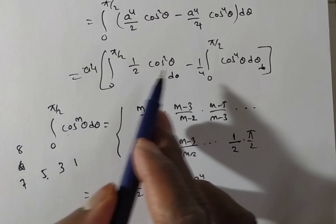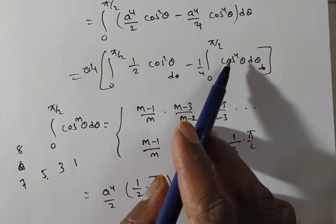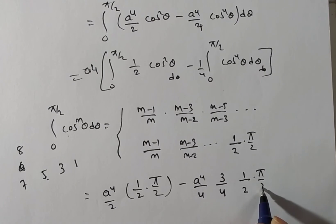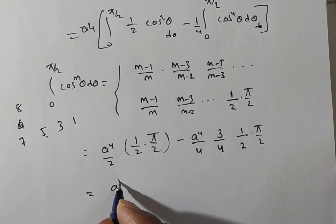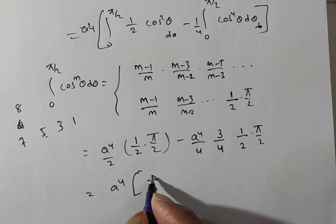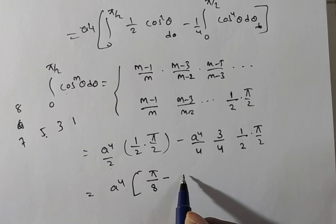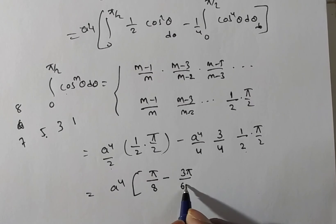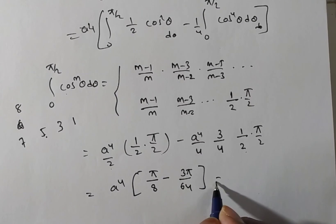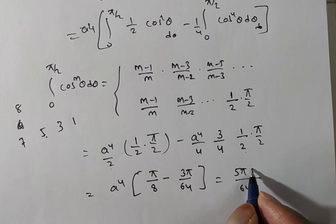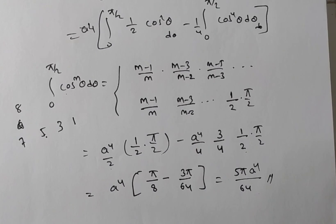Substituting: a⁴/2 × (1/2) × (π/2) minus a⁴/4 × (3/4) × (1/2) × (π/2). Taking a⁴ common and simplifying, we get a⁴[π/8 - 3π/64]. The LCM is 64, giving a⁴(8π - 3π)/64 = 5πa⁴/64. This is the final answer. Is it clear for everyone?